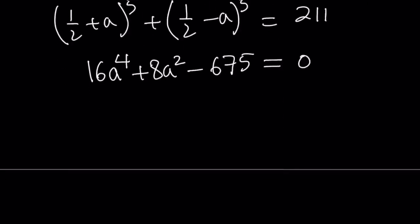Great. And this is kind of like a bi-quadratic. So by calling a squared equals b, you can kind of turn it into a quadratic equation, solve for it, and then set the b equals a squared again and find the a values.